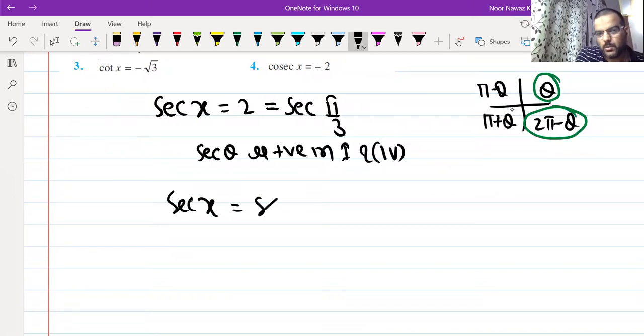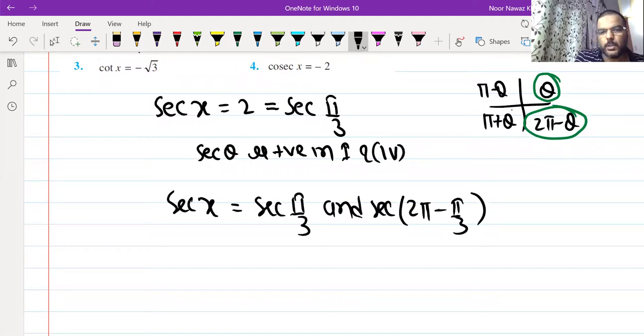sec x is equal to sec pi by 3 as it is, and sec of 2 pi minus theta. Theta is pi by 3, so this is pi by 3.